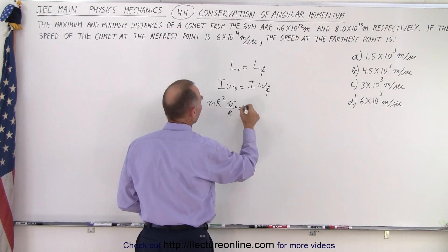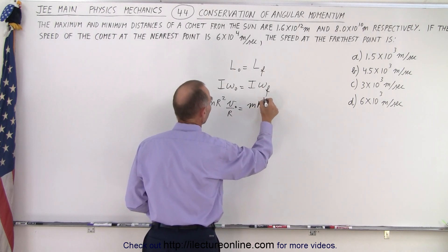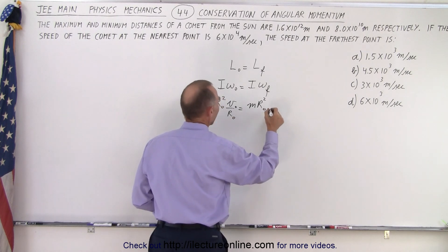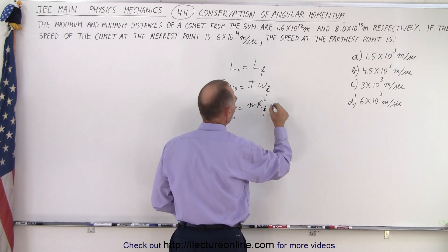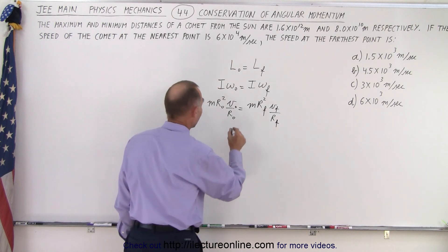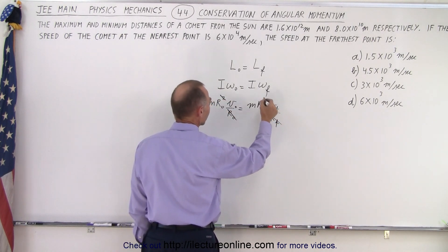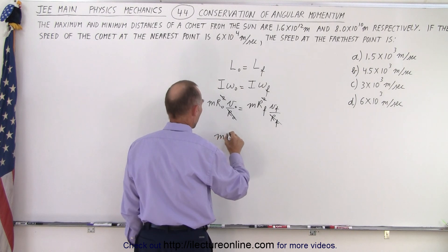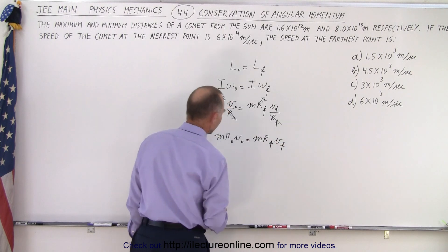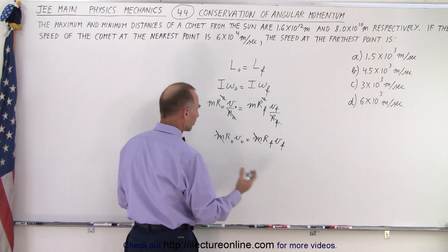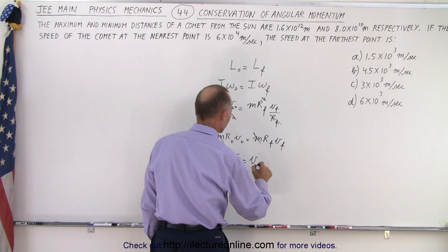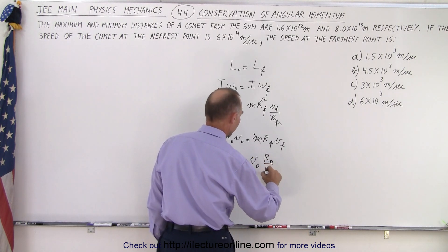So we have MR²_initial times V_initial over R_initial equals MR²_final times V_final over R_final. Right away we can simplify: one R cancels on each side, giving us MR_initial times V_initial equals MR_final times V_final. Since M appears on both sides, it cancels out — we don't need to know the mass. This means V_final equals V_initial times R_initial over R_final.